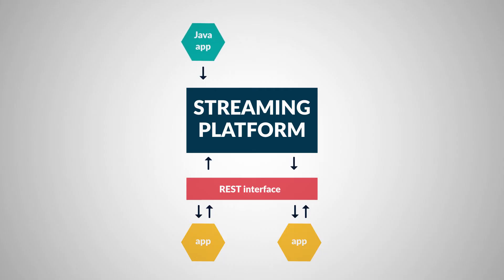The first component is client libraries. The key in getting value from a streaming platform are its capabilities to connect client apps. Since the producing and consuming apps support different technologies or programming languages like Java, .NET, REST, or MQTT, streaming platforms have support for those as well.